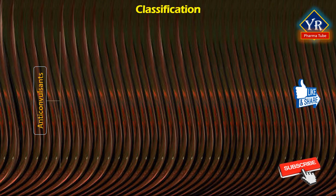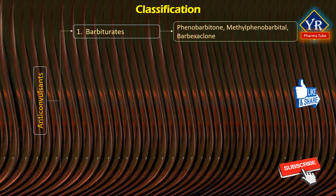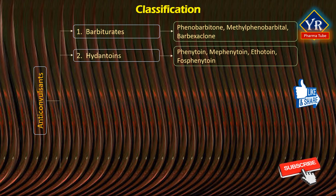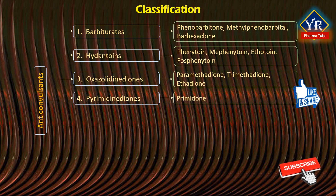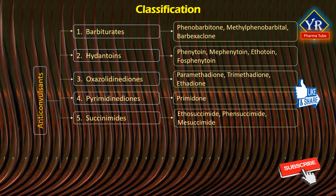Anticonvulsants are a diverse group of agents with seven major groups. Number one: barbiturates, which include phenobarbital, methylphenobarbital, and barbexaclone. Number two: hydantoins, which are phenytoin, mephenytoin, ethotoin, and fosphenytoin. Number three: oxazolidinediones, such as paramethadione, trimethadione, and ethadione. Number four: pyrimidinediones, which contain primidone. Number five: succinimides, consisting of ethosuximide, phensuximide, and mesuximide.